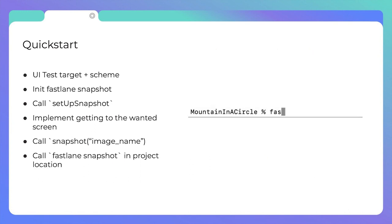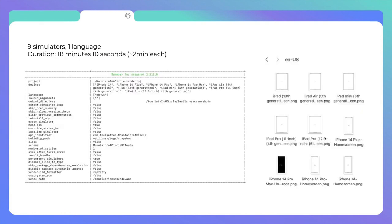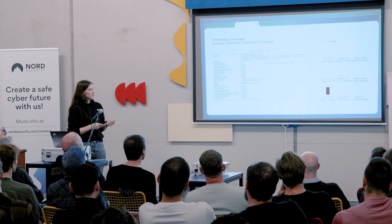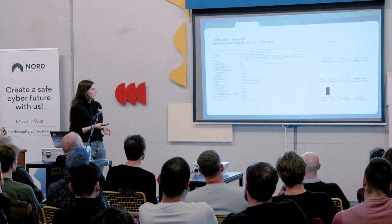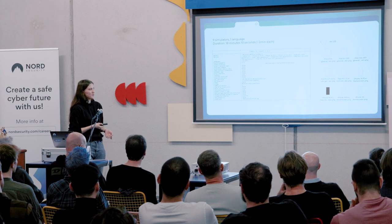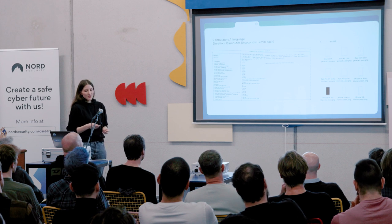Looking at the duration, you can probably see why I'm not doing a live demo. For this basic home screen screenshot, snapshot initially ran on all simulators it found — nine simulators — on one language (English), and it took about 18 minutes: roughly two minutes per screenshot. The black sheep is one simulator without its appearance being reset.